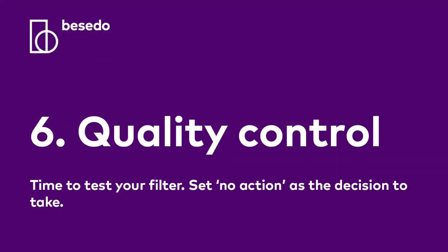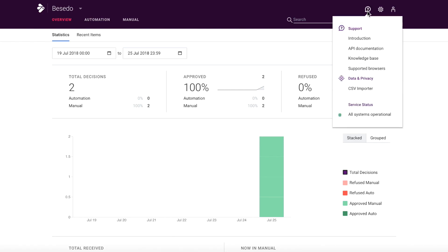Step 6: quality control. Now it's time to test your filter. As mentioned in step 3, set no action as the decision to take. Upload your data into Implio and review the matches. Did you get any false positives? You most likely did — and don't worry, that is great. That's why we run these tests: to assure the quality of the filter.